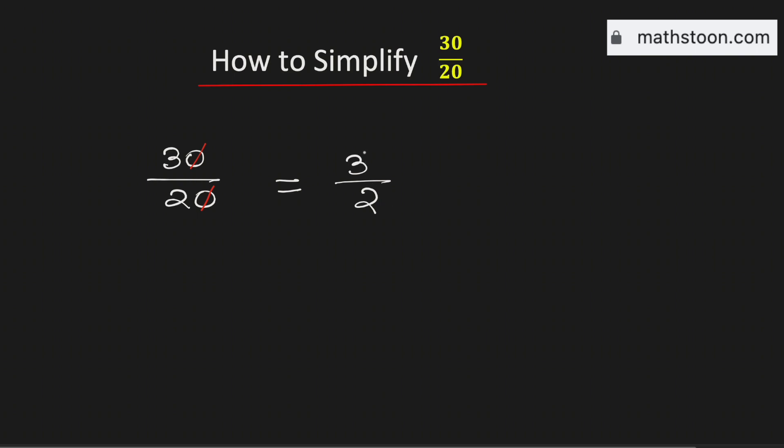And look that the numerator 3 is greater than the denominator 2. So it is an improper fraction. We will write it as a mixed number.